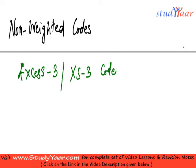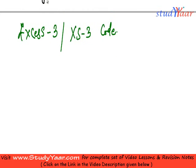So what is this? My XS3 code is simply BCD code plus 3, which is 0011 in binary.